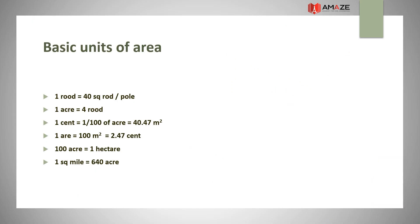Basic units of area: 1 rood = 40 square poles; 1 acre = 4 roods; 1 cent = 1/100th of an acre or 40.47 m²; 1 are = 100 m² = 2.47 cents; 100 acres = 1 hectare; 1 square mile = 640 acres.